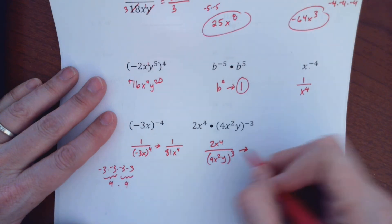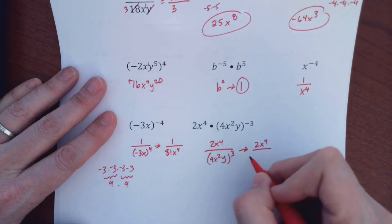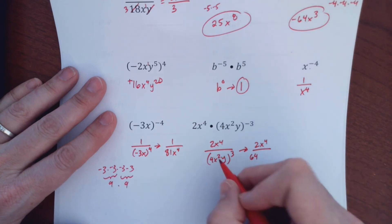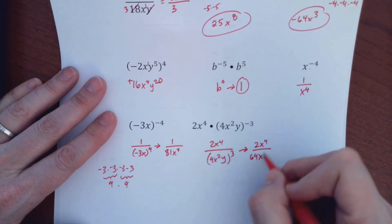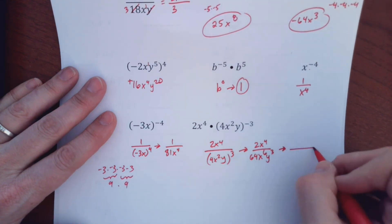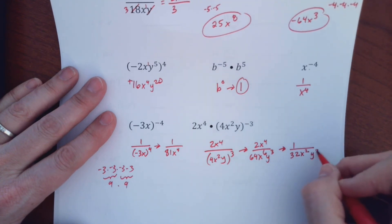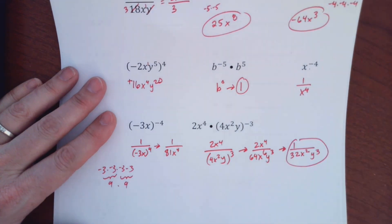I can't do anything yet because I work out my third power. So 2X to the fourth. 4 to the third is 64, we saw earlier. 2 times 3 is X to the sixth. And Y to the third. So now when I look at this problem, 2 and 64 reduce to 1 and 32. They both divide by 2. 4 and 6, so there's going to be two left down here. 4 minus 6 is negative 2. So X squared on the bottom. And Y to the third has nothing to do. So I end up with my final answer.